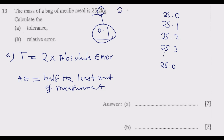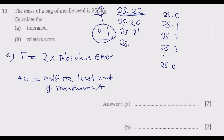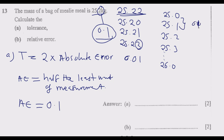To further illustrate: if we had a value like 25.20, 25.21, 25.22 and so on, we would be increasing by 0.01. In that case the least unit of measurement would be 0.01, and the absolute error would be half of 0.01, giving 0.005.